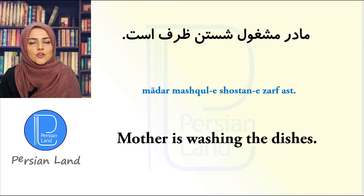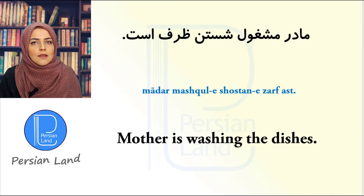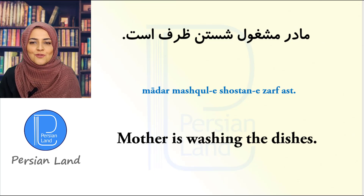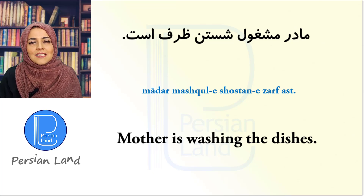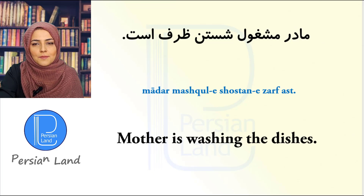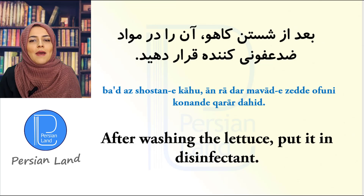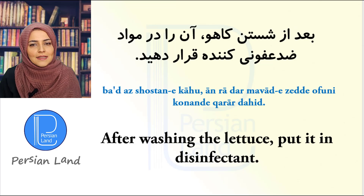مادر مشغول شستن ظرف است. مشغول چیزی بودن — or as we learned before, در حال چیزی بودن — is used to show the progressive tense. So it means 'mother is washing the dishes'.